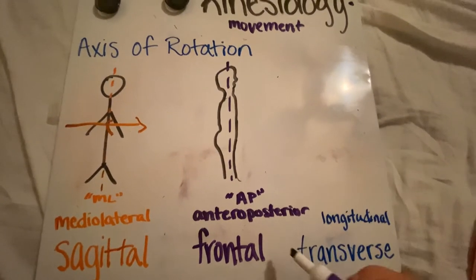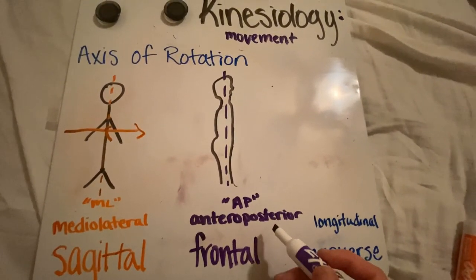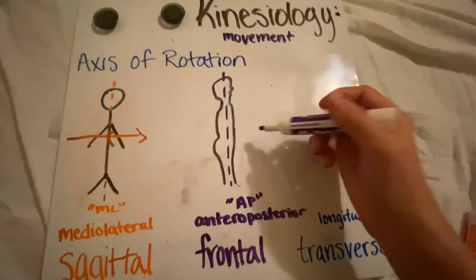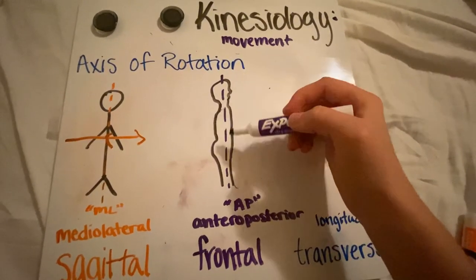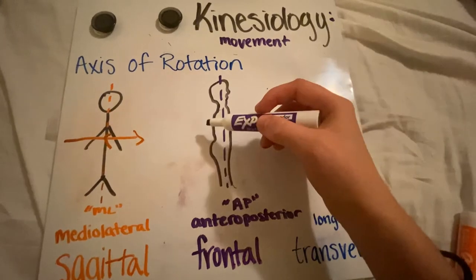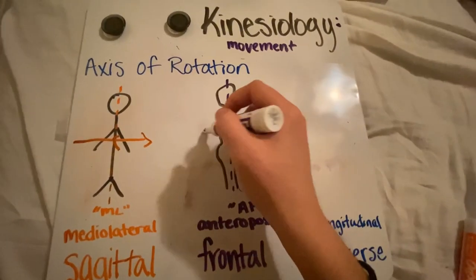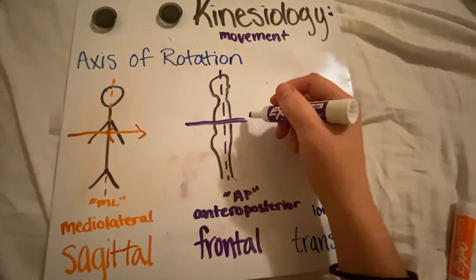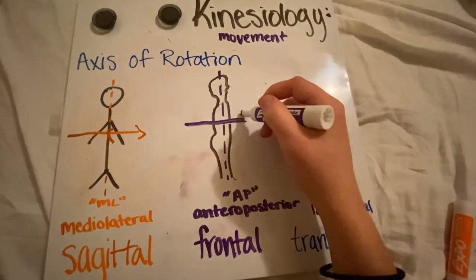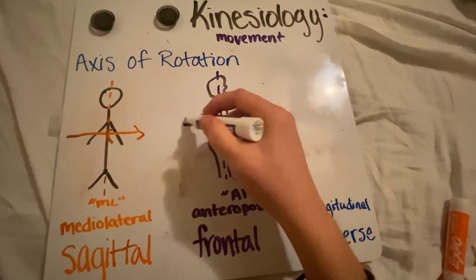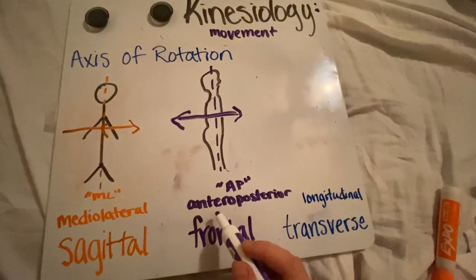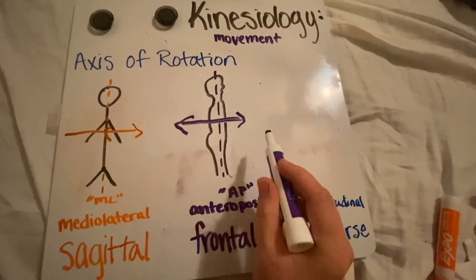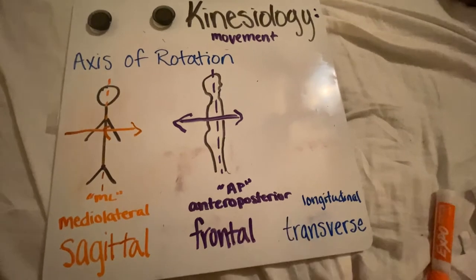In the frontal plane, we have the anterior-posterior axis, because the frontal plane cuts you front from back. Perpendicular to this would be a line running this way — and since in our directions this is anterior and this is posterior, it's called the anterior-posterior axis of rotation, or the AP axis.